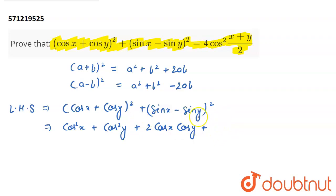Now the expansion of this term, here a is going to be sin x and b is going to be sin y. So it becomes sin²x + sin²y - 2 sin x sin y.